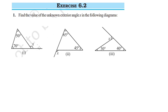What is the exterior angle property? An exterior angle of a triangle is equal to the sum of its two opposite interior angles. The exterior angle is equal to its opposite interior angles.